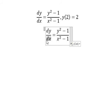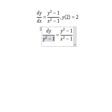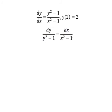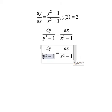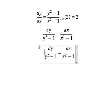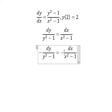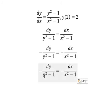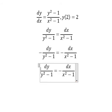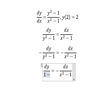Next we put the negative sign for both sides. The negative changes the sign of this one, so we have 1 minus y squared.